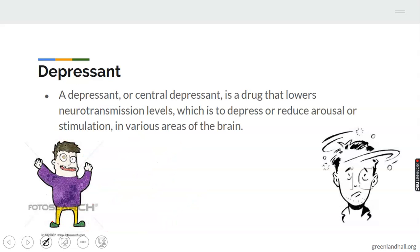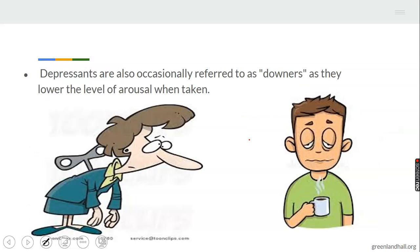We move forward to depressants. Like we said, stimulants is the uppers, depressants is downers. Depressants are drugs that lower the level, which is to depress or reduce arousal or stimulation in various areas of the brain. It is important to know here that depressants are opposite to stimulants. While stimulants will up you, depressants will bring you down. Depressants are also occasionally referred to as downers as they lower the level of arousal when you take them.